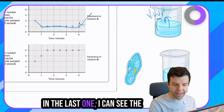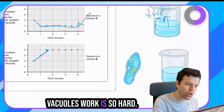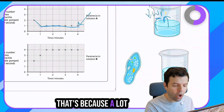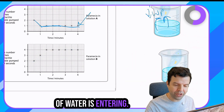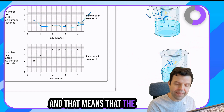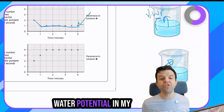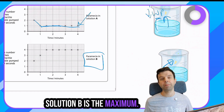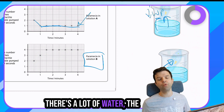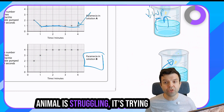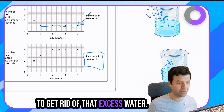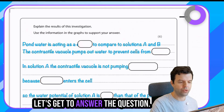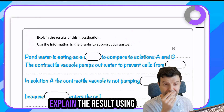In the last solution, the vacuole is working so hard because a lot of water is entering. That means the water potential in solution B is the maximum - there's a lot of water. The animal is struggling, trying to get rid of that excess water. Let's answer the question: explain the results using information from the graph.